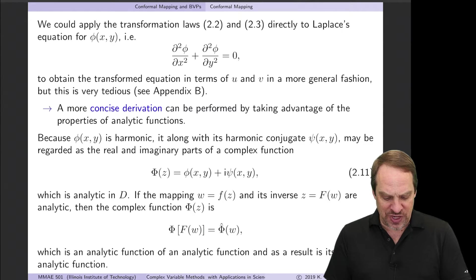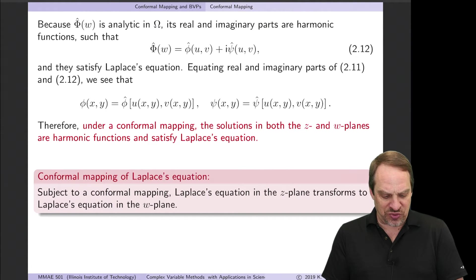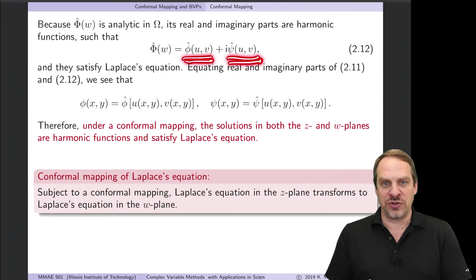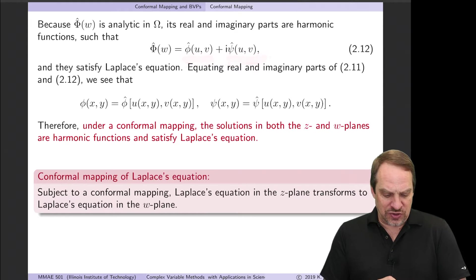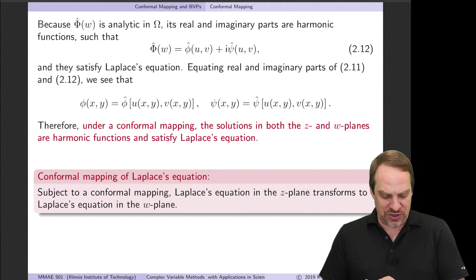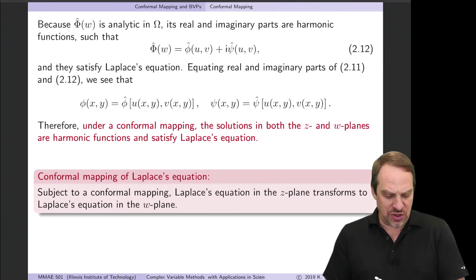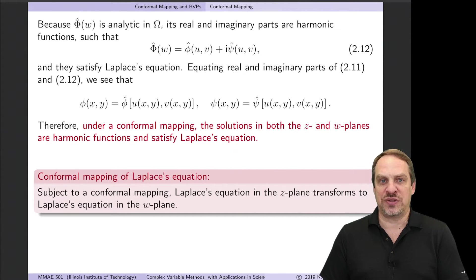Capital F of w is analytic because it's conformal, and capital Phi is also analytic because its real and imaginary parts are harmonic conjugates of one another. An analytic function of an analytic function is also analytic. So capital Phi-hat of w is indeed analytic. Because capital Phi-hat is analytic, its real part and imaginary part are also harmonic — also solutions of Laplace's equation. So if we equate the real and imaginary parts, we see that under conformal mapping, solutions in both the z and w planes are harmonic and satisfy Laplace's equation.